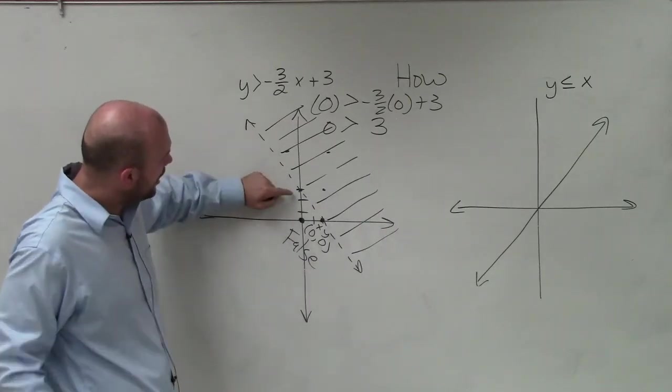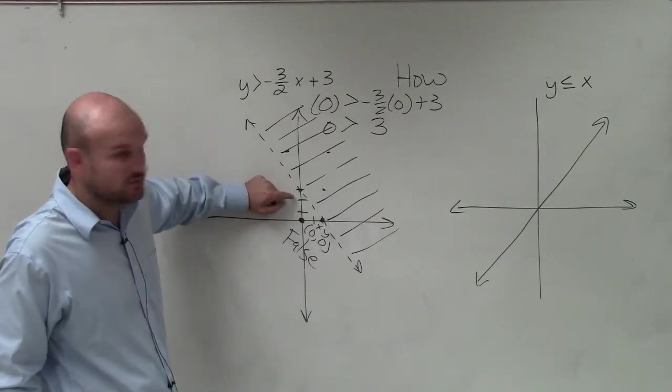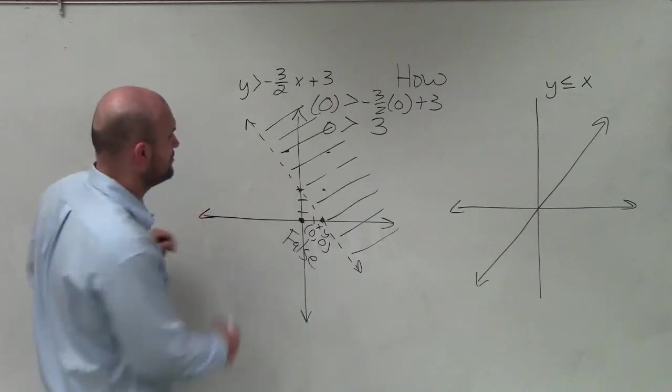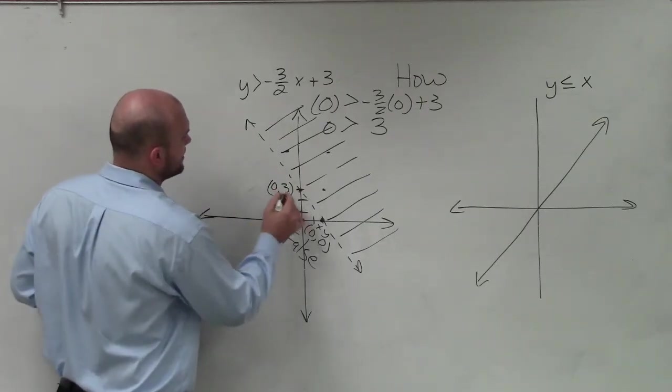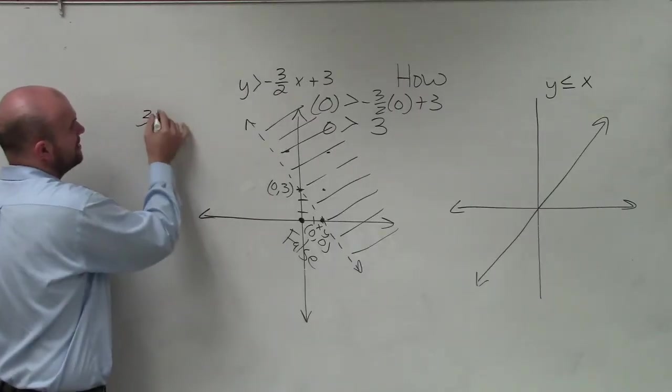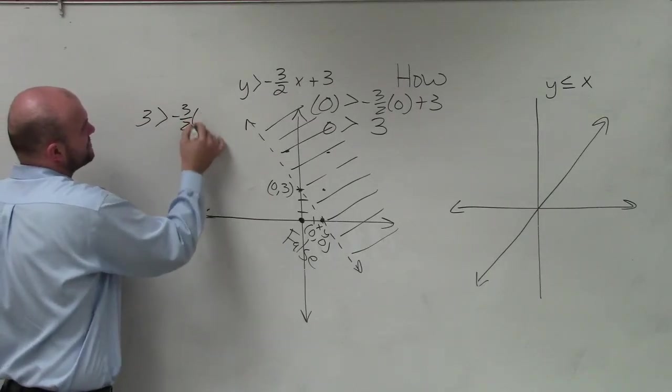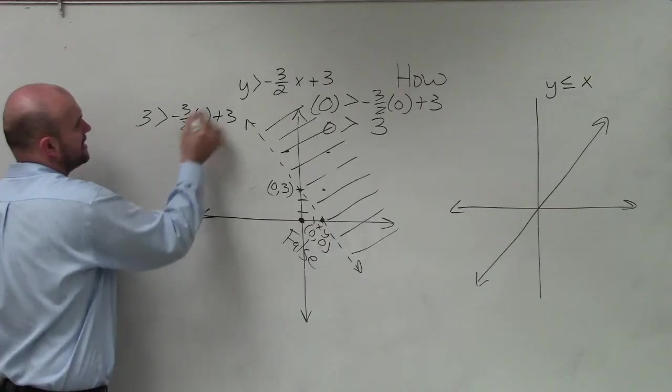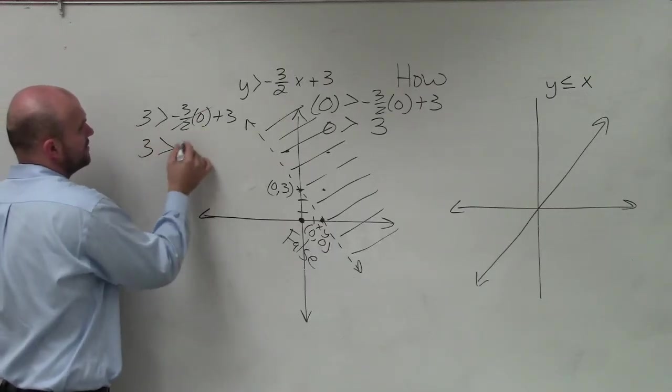Now, to show you why the points on the line are false, why we're doing a dash, let's pick another point (0,3) and show you why that doesn't work. So I have 3 is greater than -3/2 times 0 plus 3. Again, that's 0, so 3 is greater than 3.